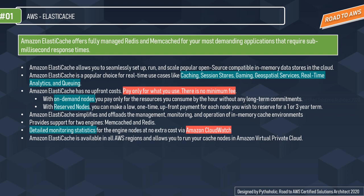ElastiCache for AWS is a fully managed in-memory data store compatible with Redis or Memcached, and it powers real-time applications with sub-millisecond latency. If you already use Redis or Memcached you'll know what an in-memory data store is. If not: databases are typically storage-based, persistent, and stored on storage volumes, whereas in-memory databases are stored on volatile memory like RAM. Accessing main memory is way faster than accessing a storage disk, and ElastiCache falls into this category.